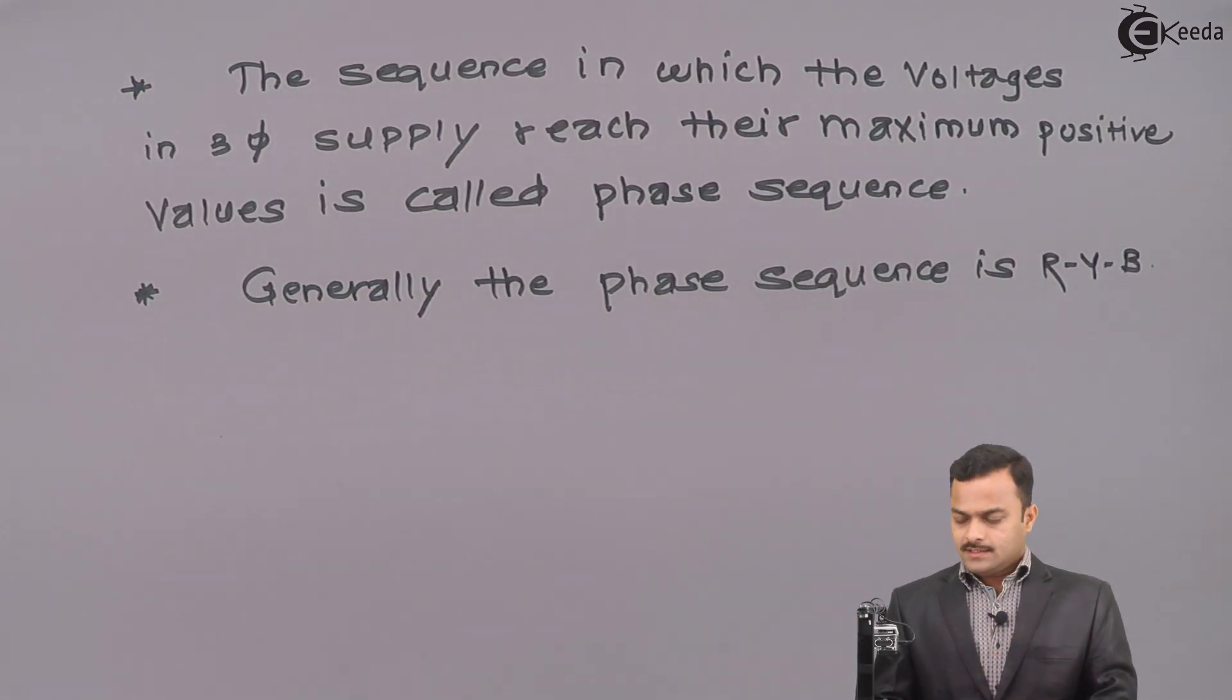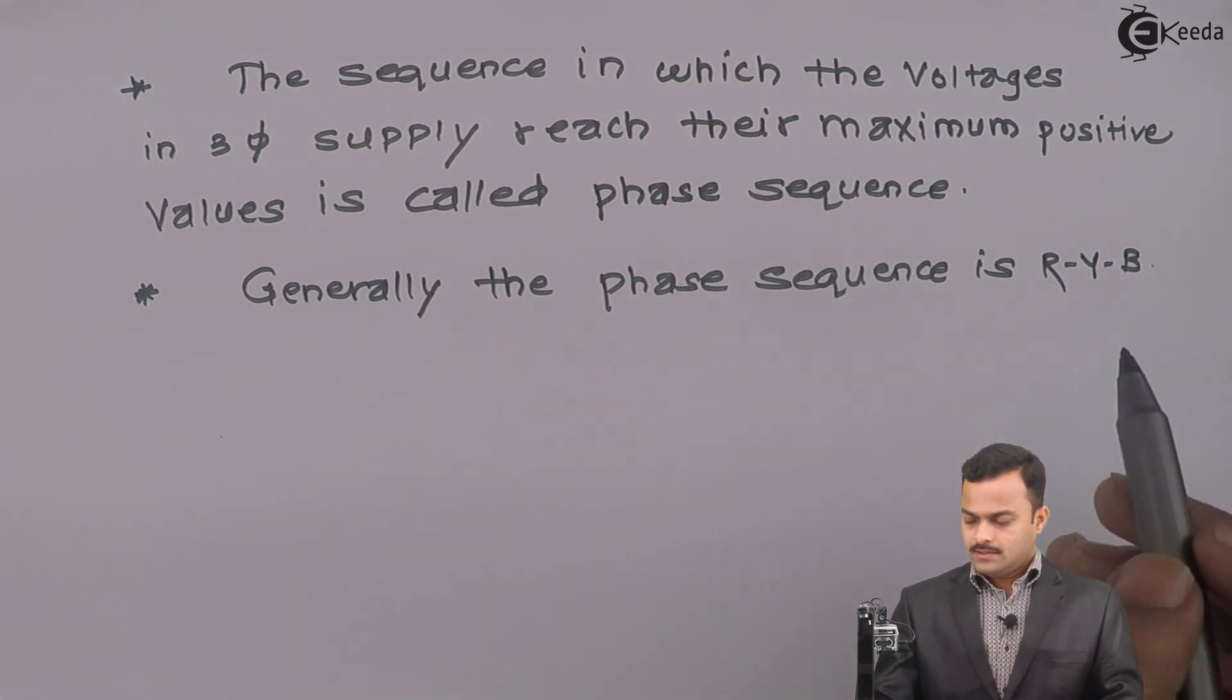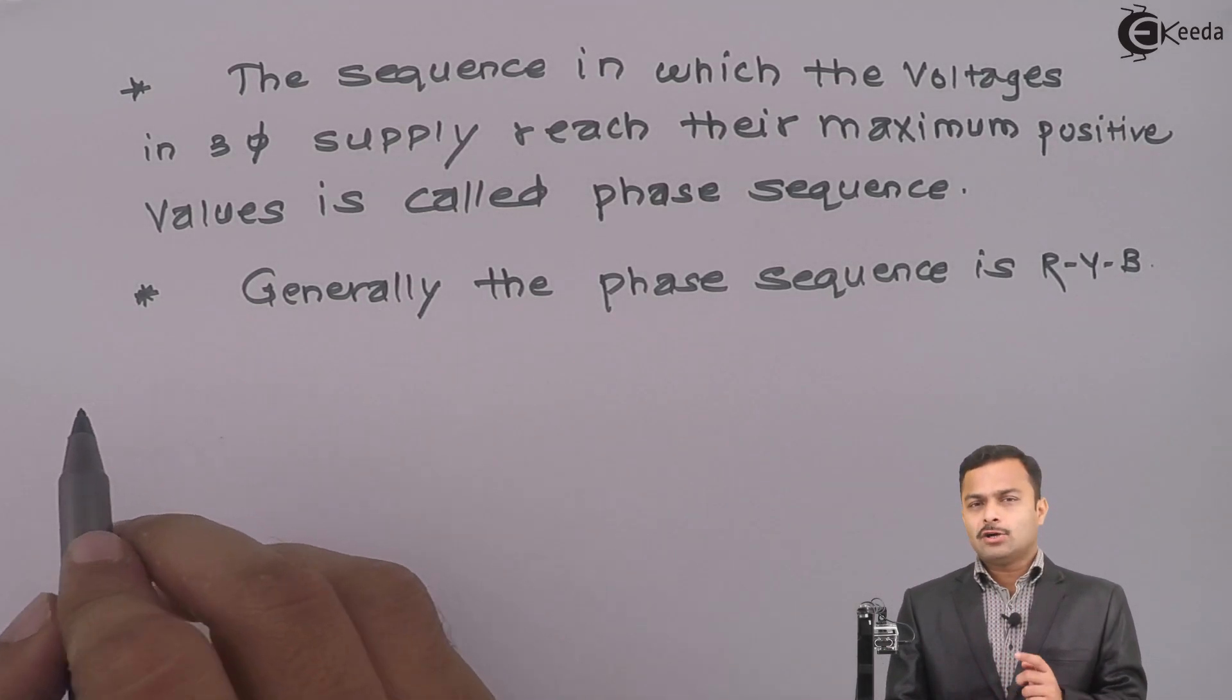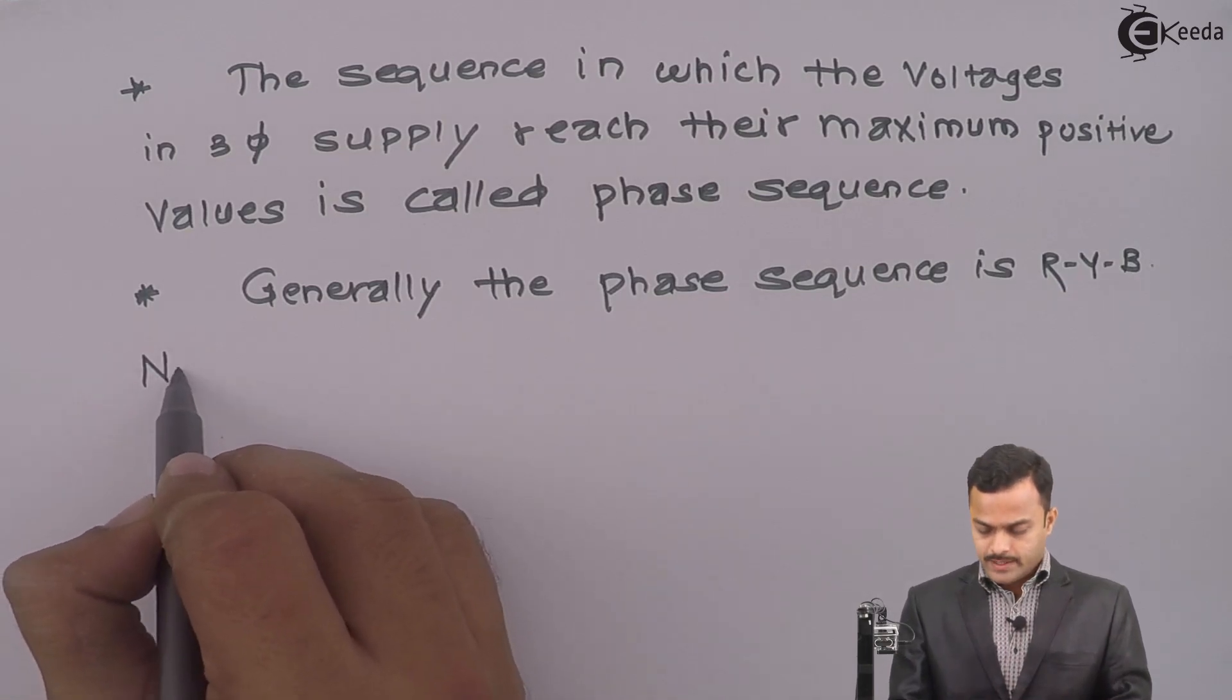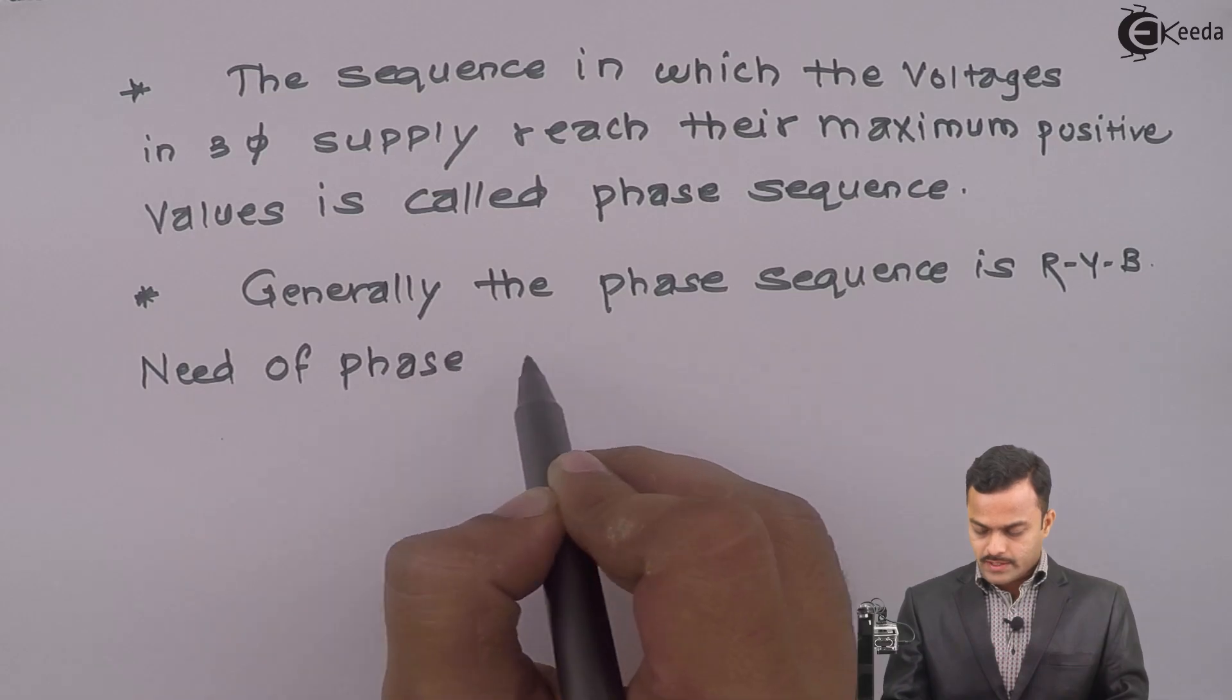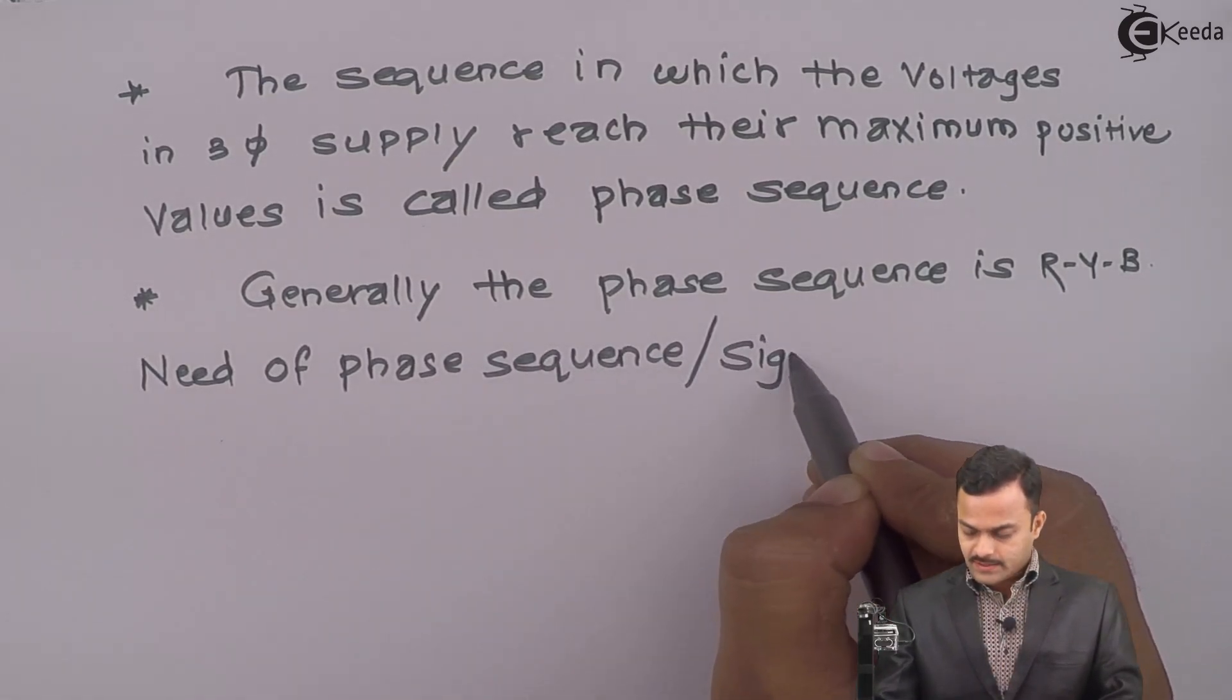See, all this given by the color that normally we prefer for connecting a phase. That means R phase normally we connect with a red wire, Y phase yellow wire and B phase blue wire. So, what is the need of this phase sequence? Very important to understand. Need of phase sequence or you can say what is the significance of phase sequence?